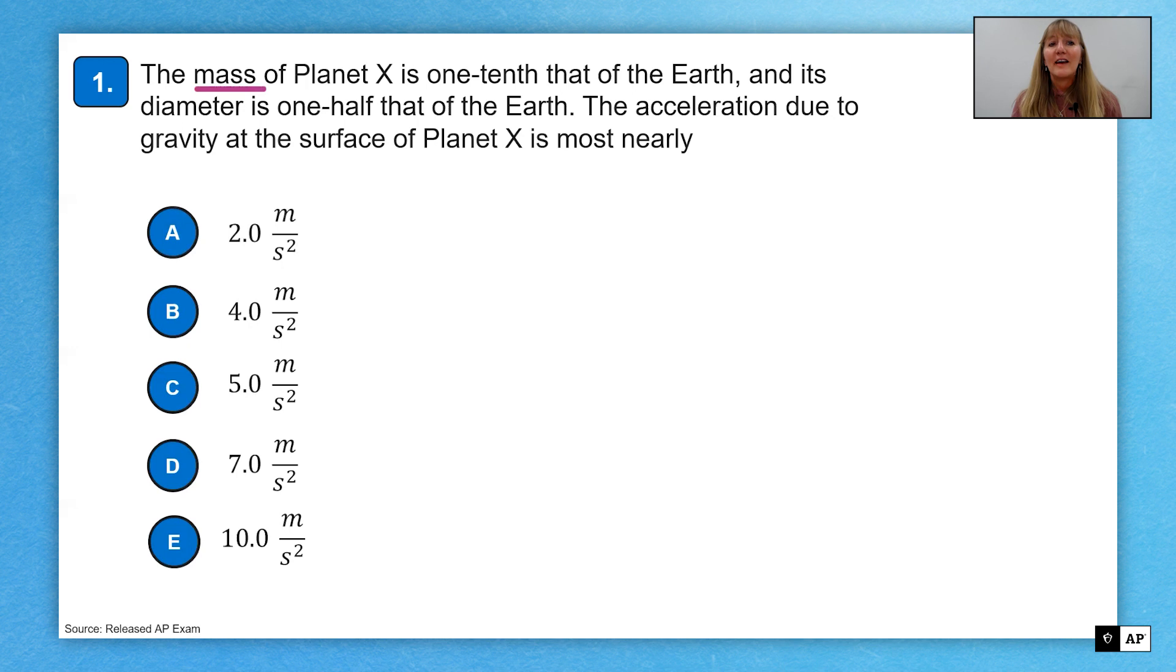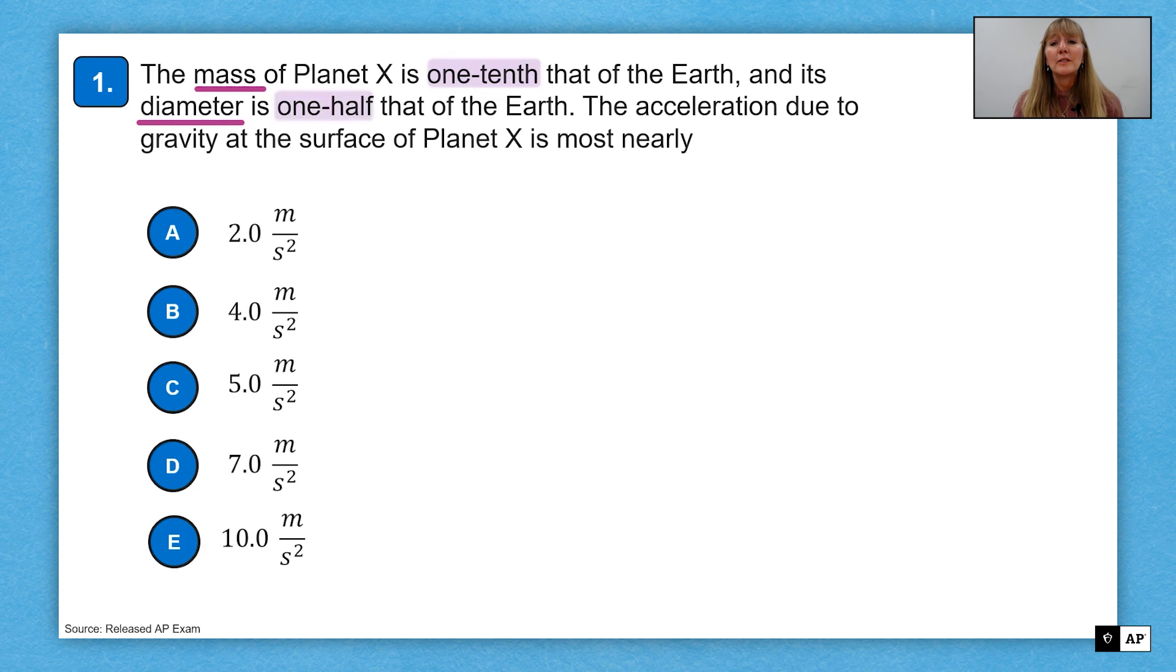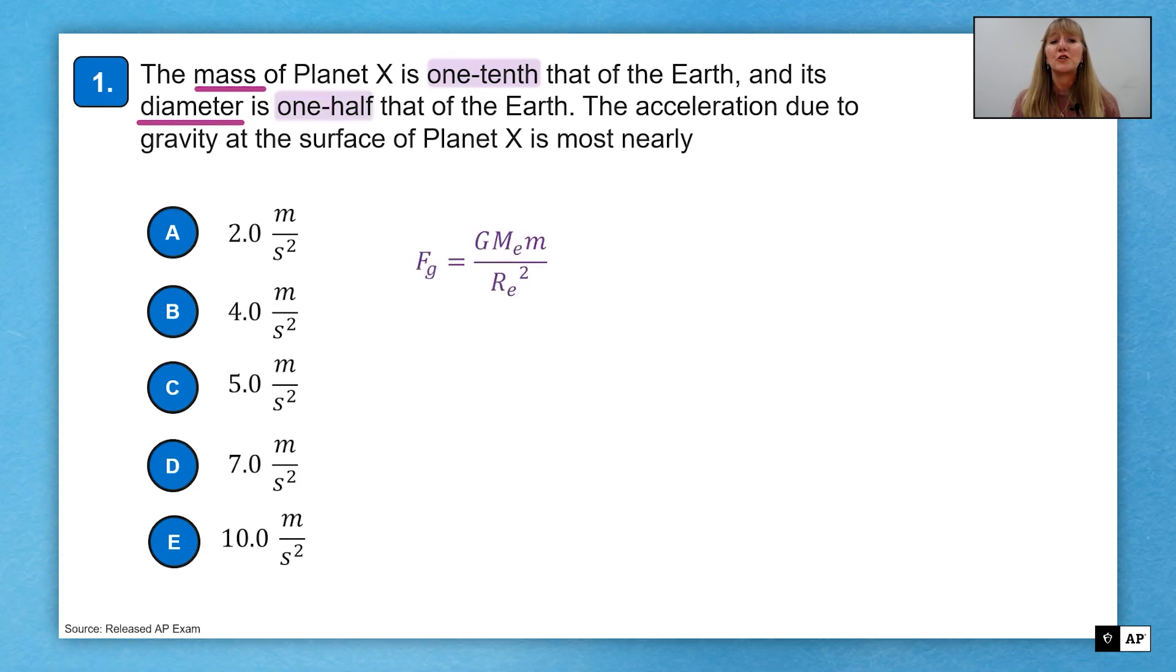For question one, we have a mass of planet X that is one tenth that of Earth. Its diameter is one half that of Earth. And what we want to know is what is the acceleration due to gravity at the surface of planet X.